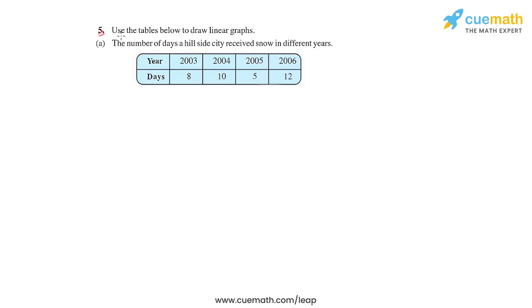In question number 5 of this first exercise, we have been given a set of values in tables, and we'll have to use them to draw line graphs. We've taken question A of this question, where we see that the number of days Hillside City received snow in different years is given in this table.